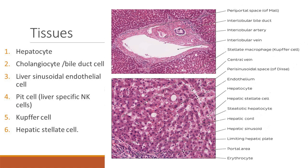Now we have to understand liver has parenchymal cells and non-parenchymal cells. Parenchymal cells are hepatocytes and cholangiocytes, while your non-parenchymal cells consist of your blood vessels and biliary ducts, the endoreticular cells including sinusoidal endoepithelium, NK cells, Kupffer cells, and then we have hepatic stellate cells.